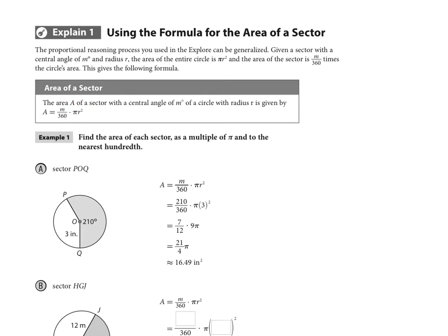For part A, as we're working through this example, we want to know what is the area of the shaded sector POQ. That's going to depend on what the total area of the circle is. So we take the measure out of 360 times πr². So that's 210 out of 360 times the radius is 3, so π times 3 squared.